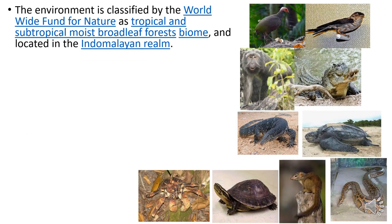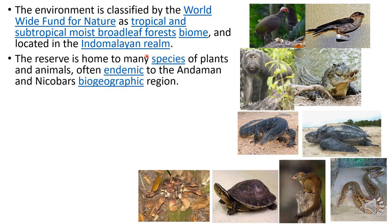The environment is classified by the World Wide Fund for Nature as a tropical and subtropical broadleaf forest biome, as the reserve is closer to the equator and located in the Indo-Malayan realm. This can be connected to the biogeographic zones discussed in the Shankar IAS Environment Series. The reserve is home to many species of plants and animals, often endemic to the Andaman and Nicobar Islands' biogeographic region.